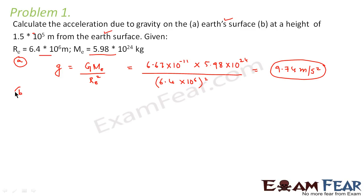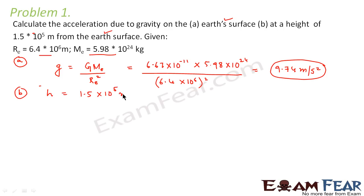Now let us look at the second part. We have to calculate the acceleration due to gravity at a height of 1.5 × 10⁵ meters from the earth's surface. This is the scenario of g above the surface of the earth. From what we derived earlier, we know that g at height H from the surface is given by a specific formula.